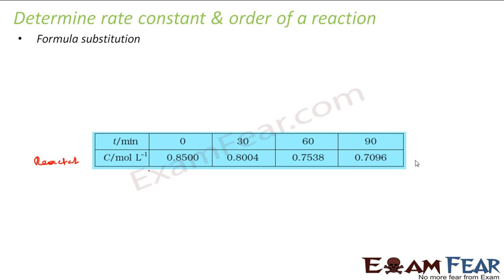The first method is formula substitution. We have used this in the past few numericals. You know the formulas of the first-order reaction, second-order reaction, and third-order reaction. We just try to fill in the values in the formula, and one formula which takes care of all these values is the correct formula, and the order corresponding to that formula will be my order of reaction. So in this case it's actually a hit and trial method.